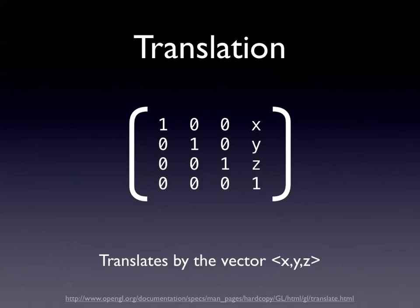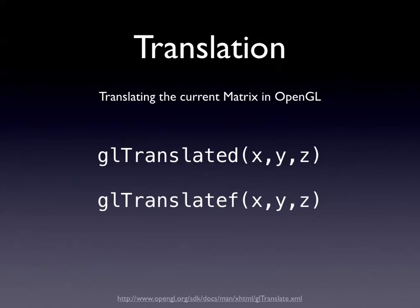Translation is moving an object around - that's the sort of matrix you'd use, although thankfully you never have to use it directly. You just call GL_TranslateD or GL_TranslateF. The D and F refer to double and floating point precision. The X, Y, and Z components in each would be doubles or floats.